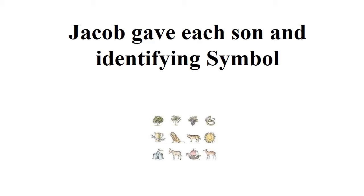Jacob gave each one of his sons a symbol, and those symbols were put on their tribal flags. The Midrash, which is an ancient book, recorded what those flags looked like. We're going to use those symbols to help identify each of the twelve tribes and determine where they are today.